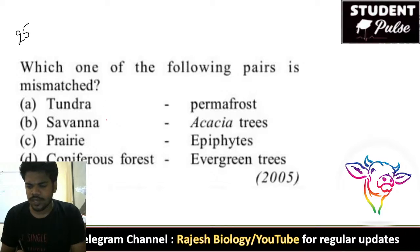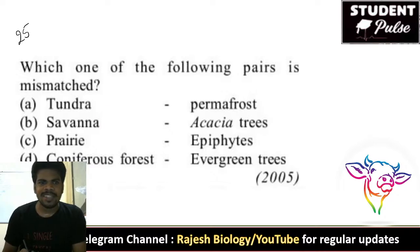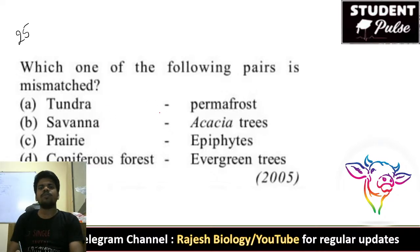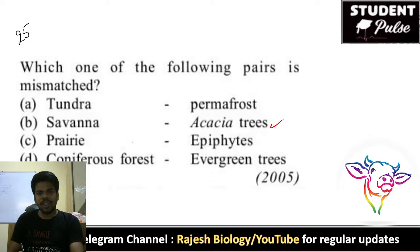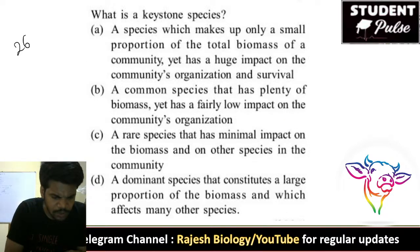Twenty-fifth question: which one of the following pairs is mismatched? Tundra with permafrost is correct, savanna with acacia trees is correct. But prairie with epiphytes — this is wrong. Prairies are grasslands; epiphytes are associated with tropical forests. So the mismatched pair is prairie with epiphytes.